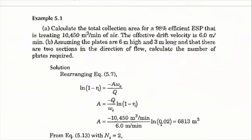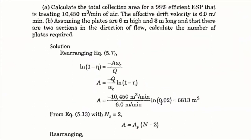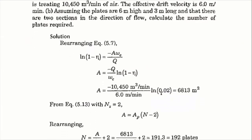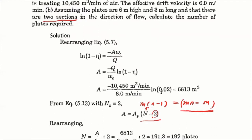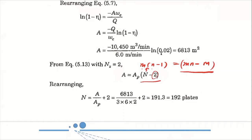This is the example problem we went through in class. There's an issue with the textbook method — it expands m × (n − 1) by equating capital N with m × n, then subtracting m, giving mn − m. With two mechanical fields, the final number of plates must be divisible by the number of mechanical fields. That's the general idea of the practical ESP design.